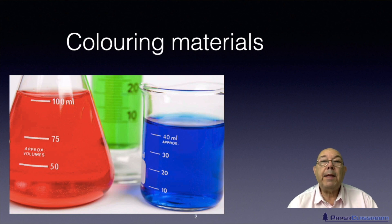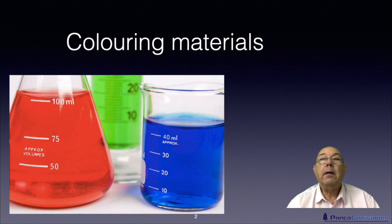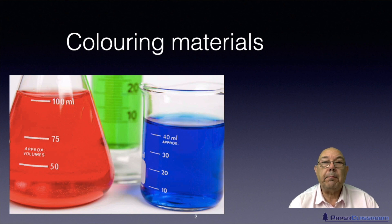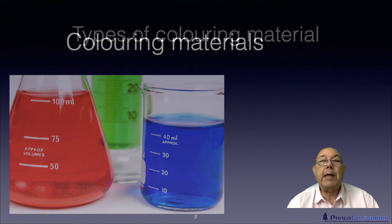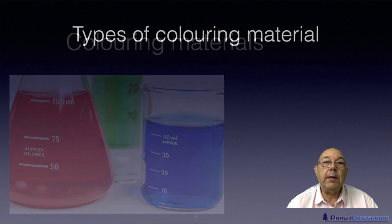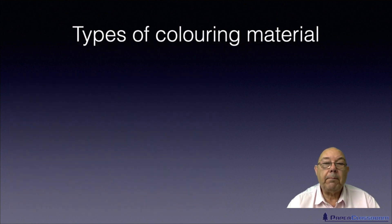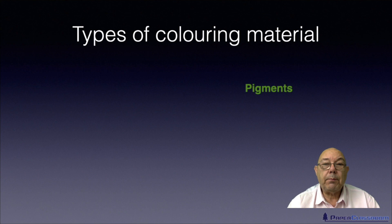In this particular session we're going to be talking about colouring materials — things that we add to the paper to make it anything other than white, which most paper is. So we'll start off with looking at the different types of colouring material.